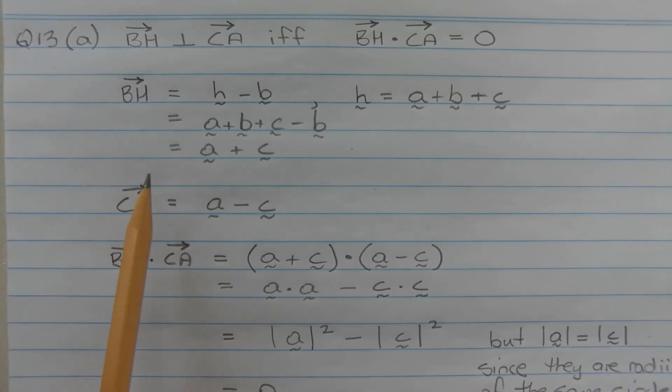So vector BH is equal to vector A plus vector C. Now vector CA is equal to vector A minus vector C.